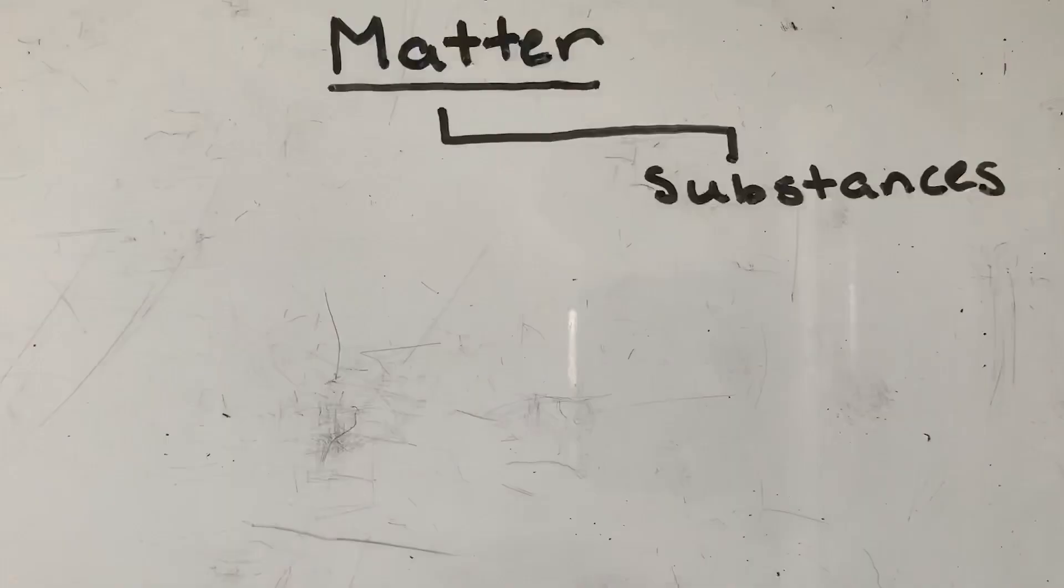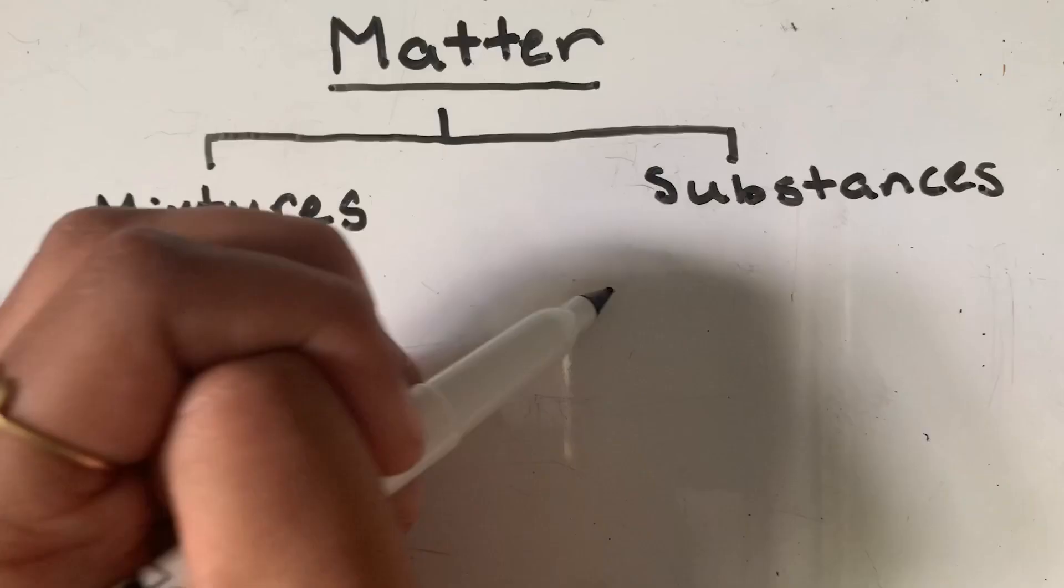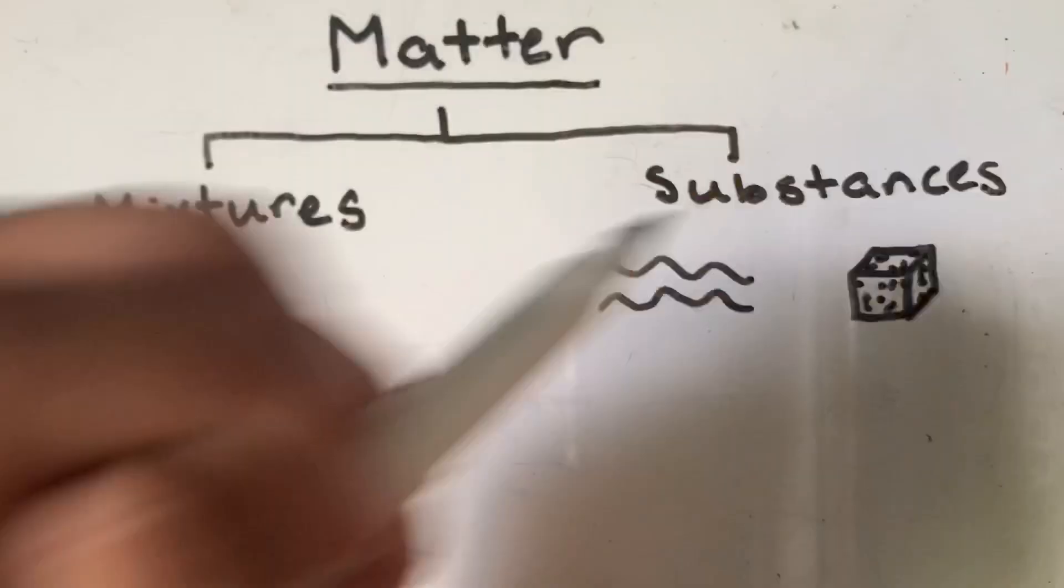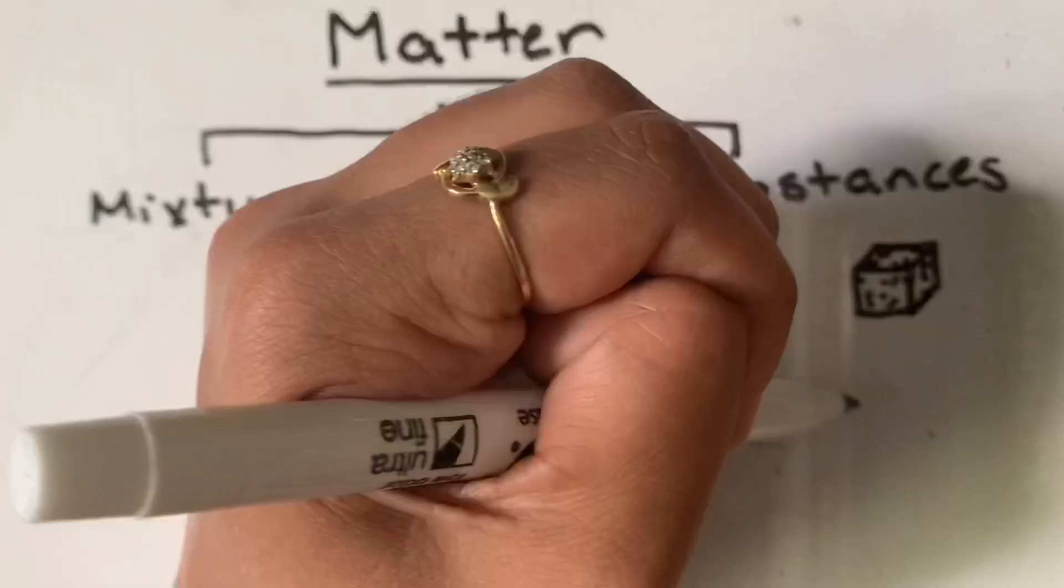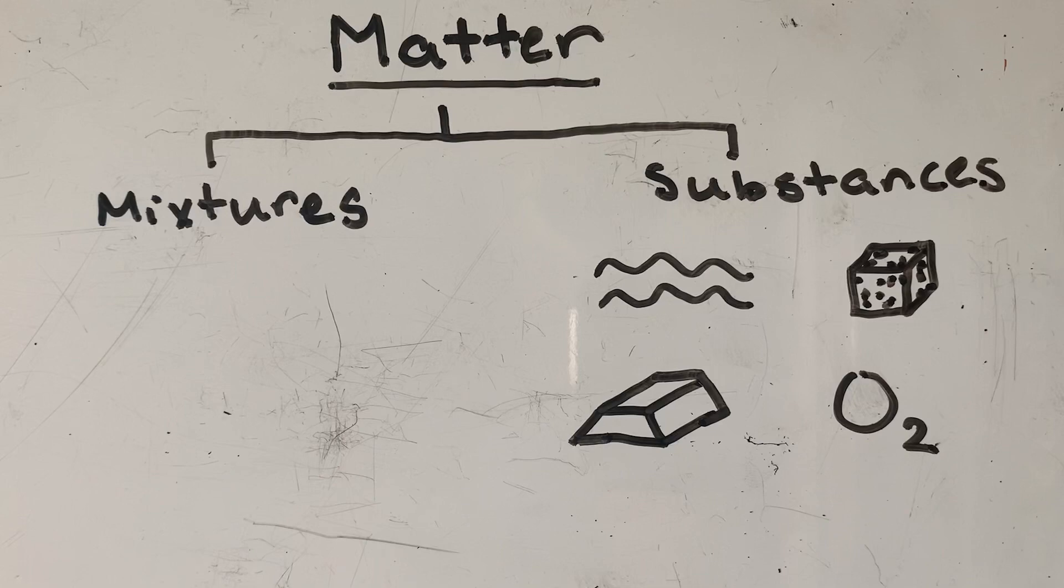Matter is further classified into substances and mixtures. Substances have definite compositions and retain distinct properties like water, sugar, gold, and oxygen. Two or more substances can be combined together physically to form mixtures. Mixtures could be something like your bowl of cereal, soft drinks, or cement.